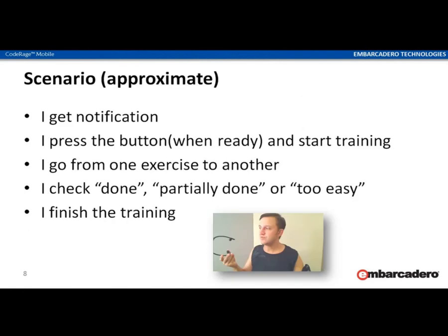The scenario is like this: I get a notification, I press the button when ready and start training. I select exercises from a list, going from one to another. After I have done each exercise, I select Done, Partially Done, or Too Easy for me. Then I finish the training.